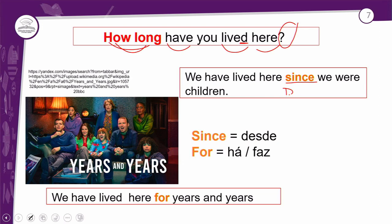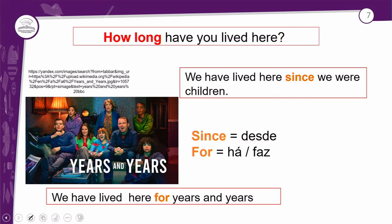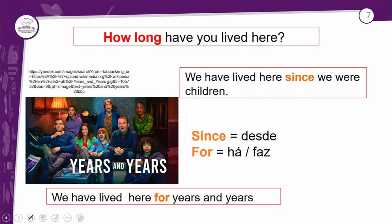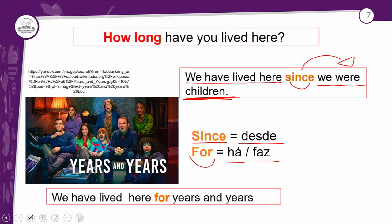O 'since' significa 'desde' — é o ponto de partida da ação. 'We have lived here since we were children.' — Nós moramos aqui desde que nós éramos crianças. O 'for' significa 'há' ou 'faz': 'We have lived here for years and years.' — Nós moramos aqui há anos e anos. Enquanto 'since' marca o início da ação, 'for' indica o período de duração.